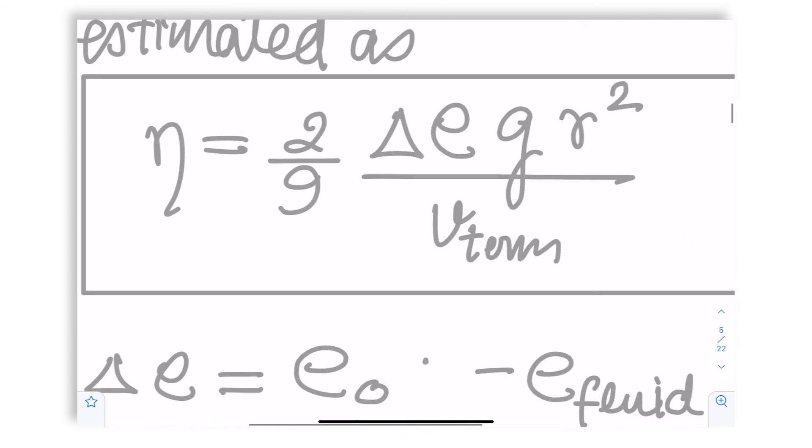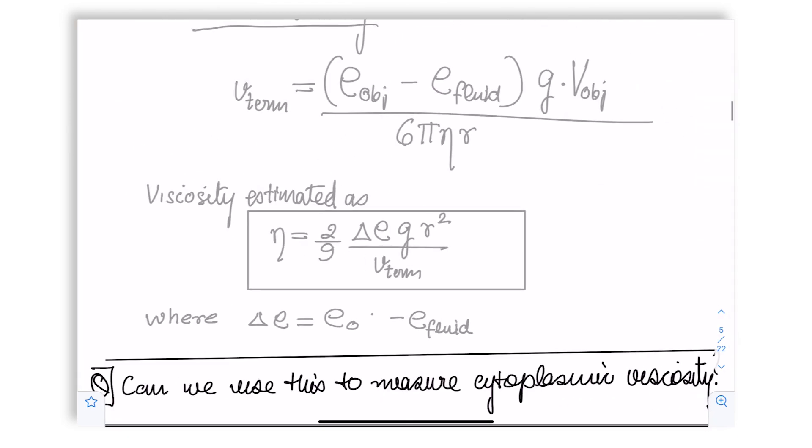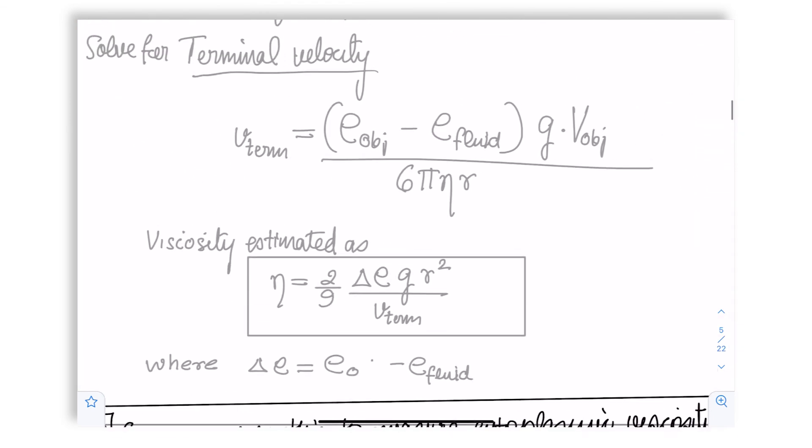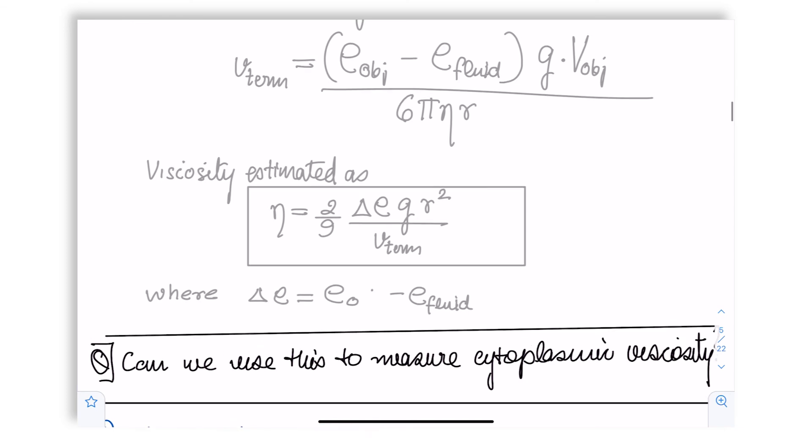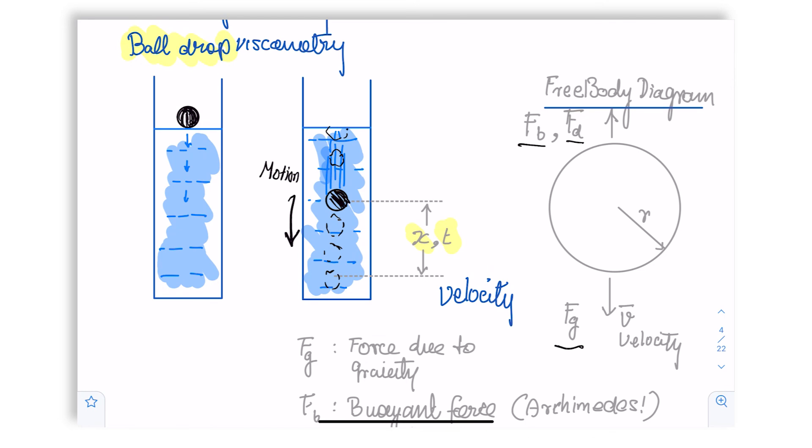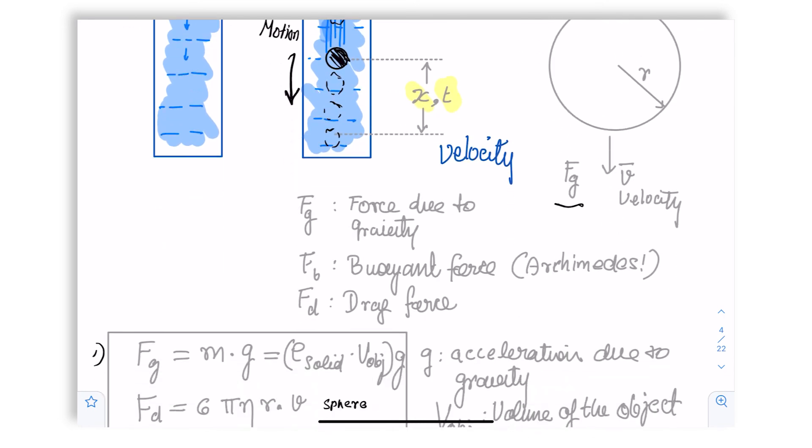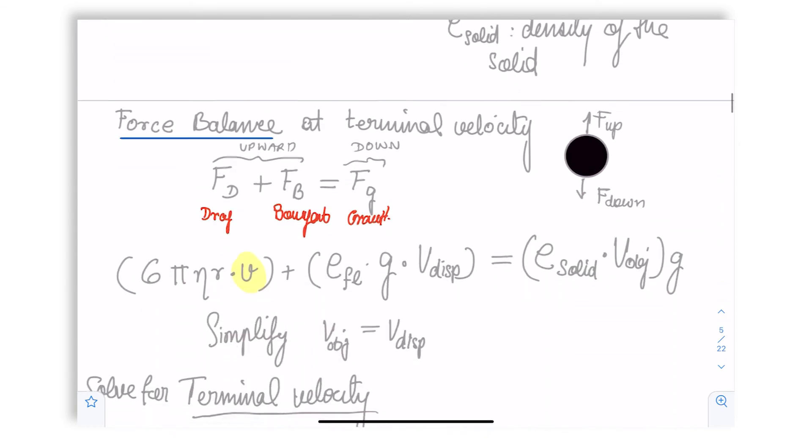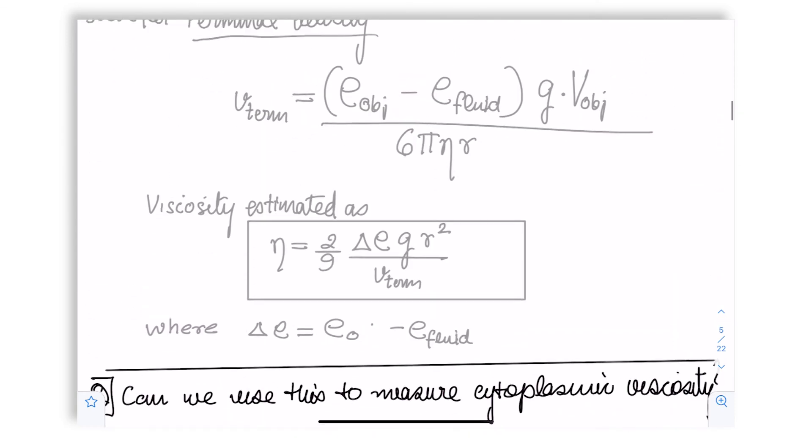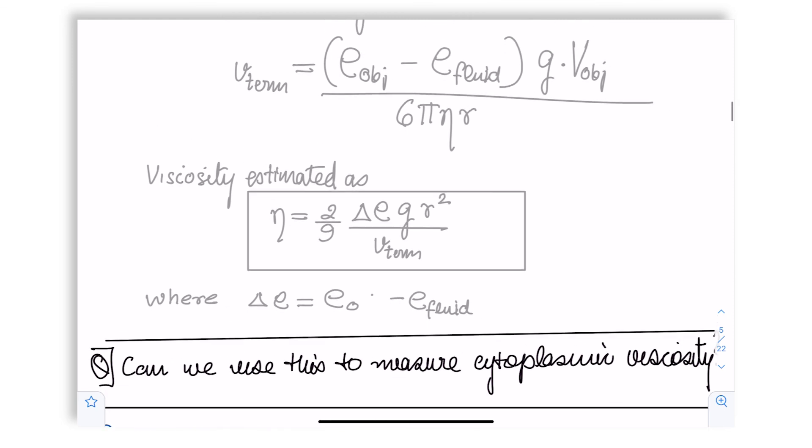And doing the experiment, we can estimate the terminal velocity. Which means after we do the experiment and we know these parameters, we can find out the viscosity of the fluid. Wonderful, correct? A simple—such a simple experiment. Just let a ball fall in a long column of fluid, let it reach its terminal velocity, measure the velocity, substitute the values, and you get viscosity. So let's ask the next question, which is: can we use this to measure cytoplasmic viscosity?